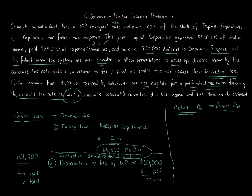Now we're getting to the actual question — the gross-up. The $84,000 of tax due gives no benefit to the individual shareholder when calculating tax owed on the distribution. What if the law was changed to provide some type of benefit? With no preferential rate and a 21% corporate tax rate, what is Coconut's reported dividend income under a gross-up system, and what is the tax due on the dividend?